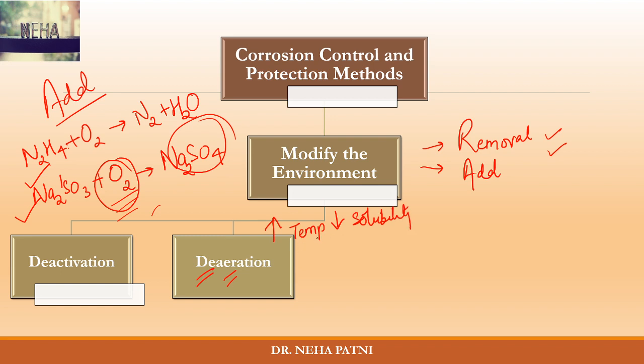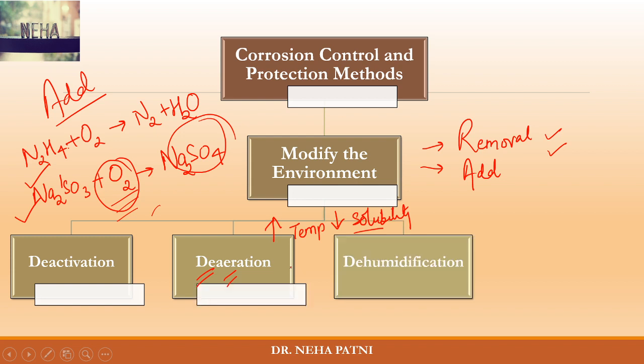When you increase the temperature, the solubility of gas decreases. So you heat the liquid — water or electrolyte — with proper agitation. There should be an air vent so the gas comes out. This method also reduces other gases like CO₂ content of water, overall decreasing the corrosion rate. A perfect example is a steel pipeline which carries steam condensate from a boiler.